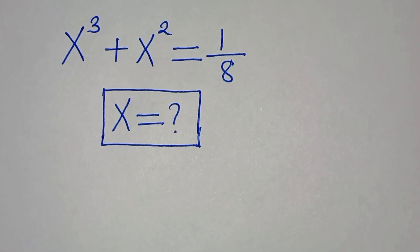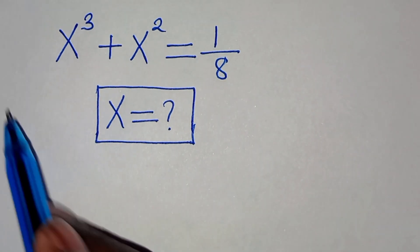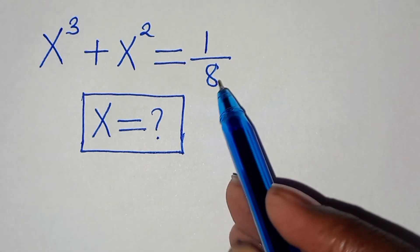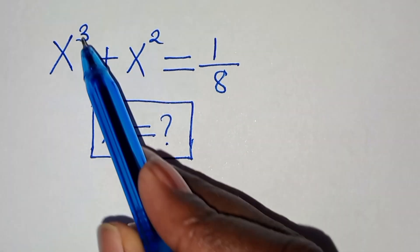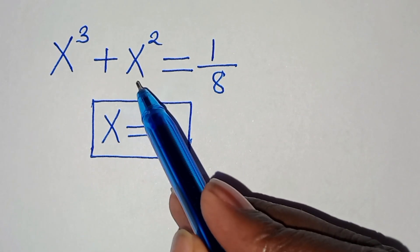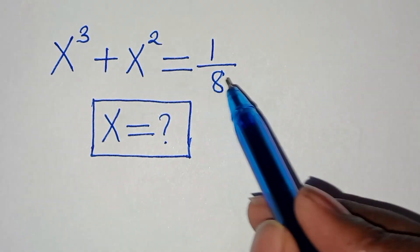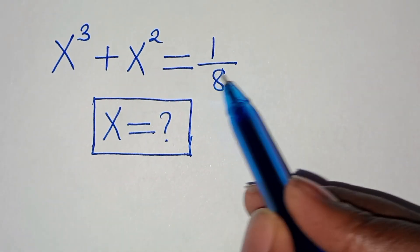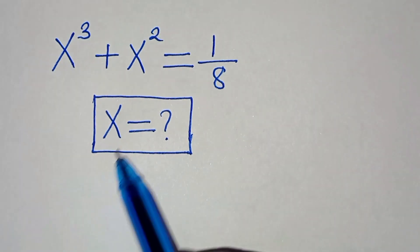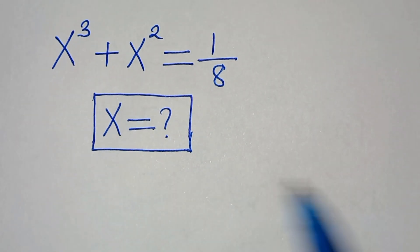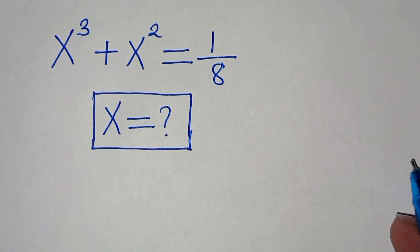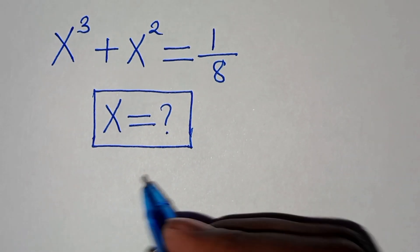Hello everyone, you're welcome to solve this nice algebra problem which is x to the power of 3 plus x to the power of 2, and this is equal to 1 over 8. So what are the values of x?